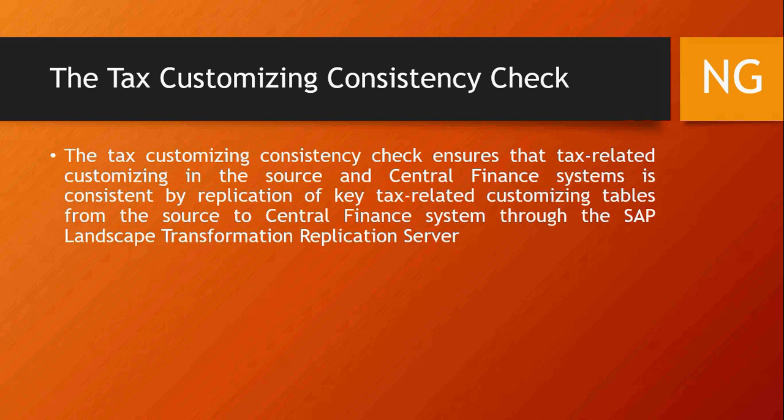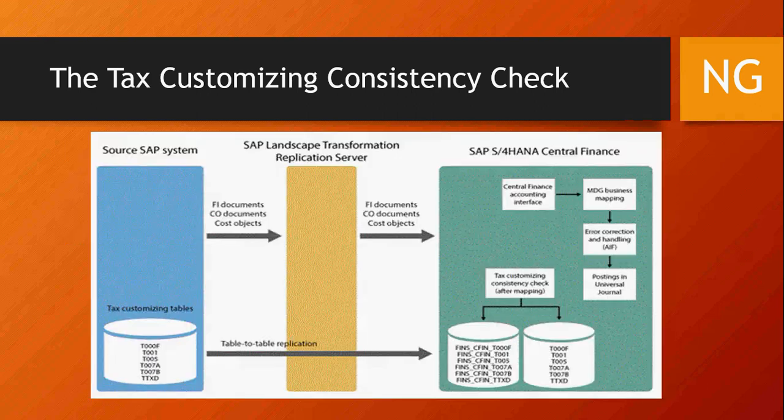Tax customizing consistency check ensures that tax-related customizing in Central Finance is consistent by replication of key tax-related customizing tables from source to S/4HANA. Tables such as CFIN_ACC_HD, AUFK, CUBK, T000F, T00157A, T0157B, and TTXD are replicated to S/4HANA — these are added with a FINS_CFIN_ prefix on the table name. The intent is to have tax reporting from S/4HANA itself. Since your payments, receivables, noted items, and down payments are all part of S/4HANA, all your consolidated numbers are there too.